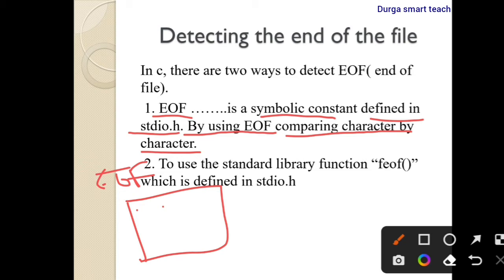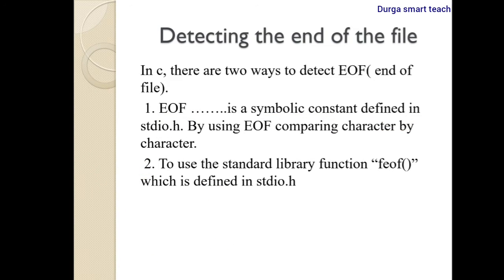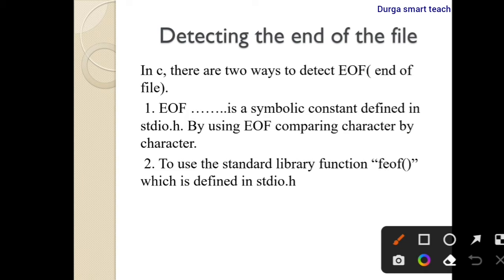A file is nothing but a collection of data — a collection of information. If you want to identify the end of the file, you need to search and compare character by character. If there is no character at the end of the file, that means that is the end of the file. By using EOF, we can easily identify the end of the file.